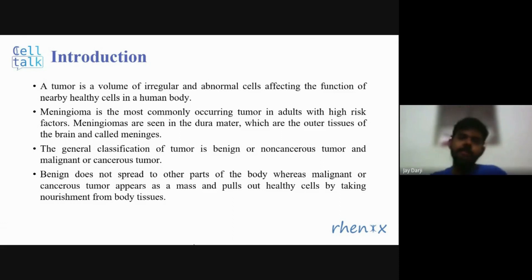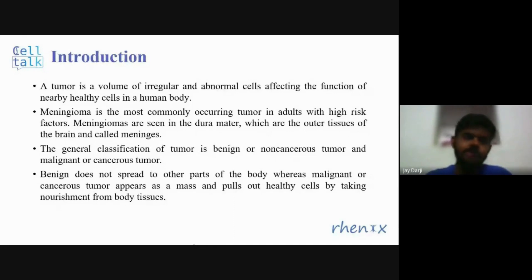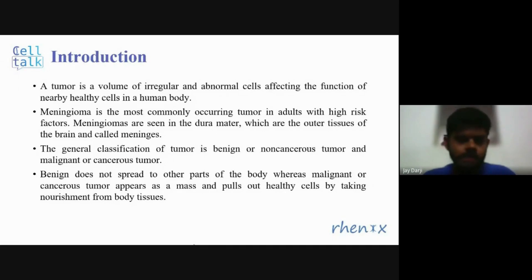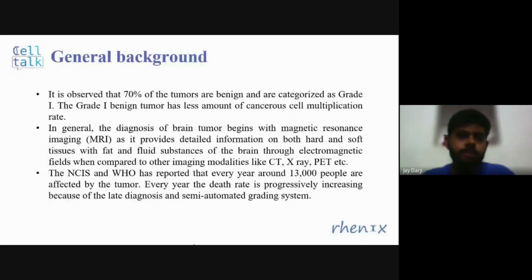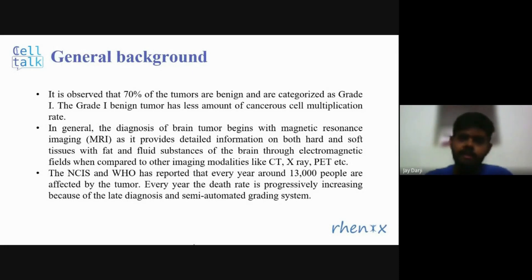Tumors are basically of two types. One is benign, also known as non-cancerous tumor. The other is malignant, also known as cancerous tumor. This classification is done based on the multiplication rate of cancerous cells. Benign tumor does not spread to other parts of the body, whereas malignant tumor appears as a mass and pulls out healthy cells by taking nourishment from body tissue. Researchers have observed that 70% of tumors are benign and categorized as grade 1, while grade 4 represents malignant tumor.